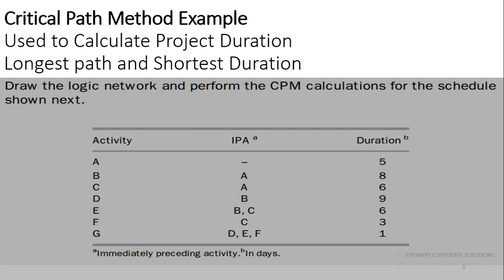In this slide we have a very simple scenario. On the left-hand side we have some activities: Activity A, Activity B, Activity C, Activity D, Activity E, Activity F, and Activity G. On the right-hand side we have the immediately preceding activities, and on the right corner we have the duration of these activities. Let us proceed with the first step.